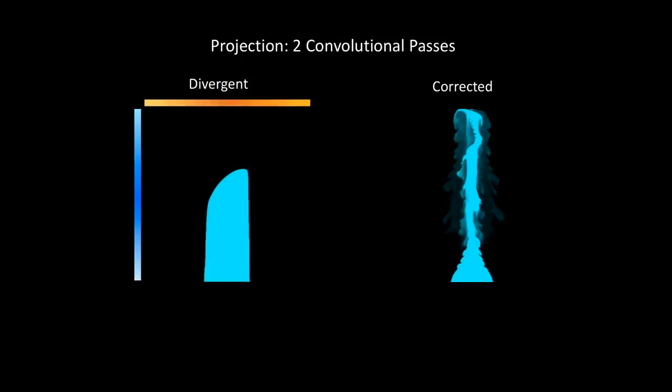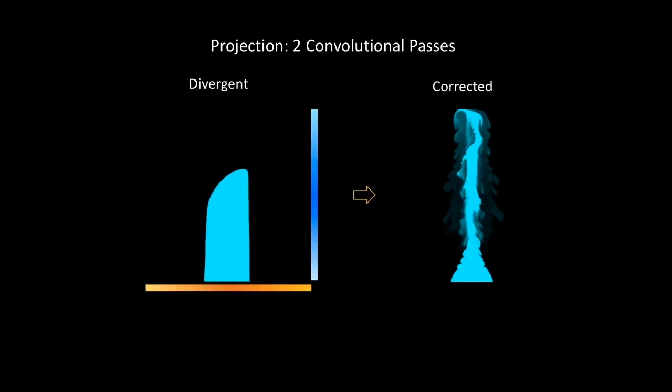We then perform two convolutional passes on the divergence and use the results to correct the velocity. It's a simple code, fast, and there is no CPU loop involved.